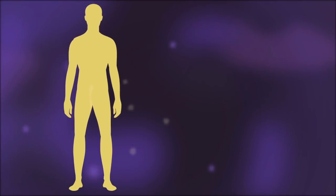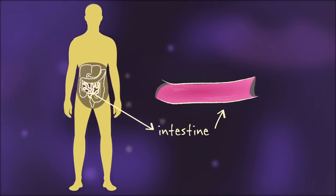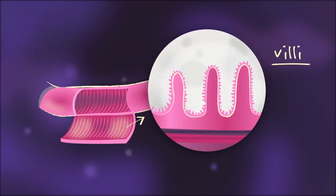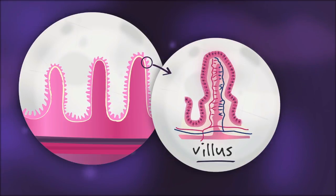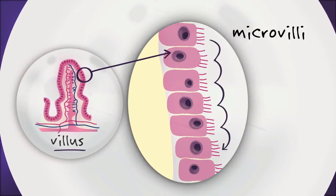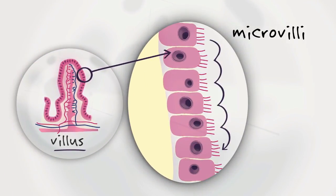Another example can be found in your small intestine, where structures called villi fold up into little fingers. Each villus is made of cells with highly folded membranes that have tiny bumps called microvilli to increase their surface area.